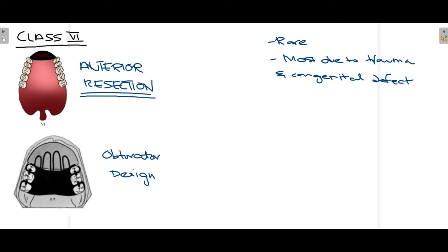In this video, we talked about Aramany's classification of maxillectomy — what maxillectomy is, what an obturator is, the basic objectives of an obturator to keep in mind before designing one, and the importance of planning your obturator before surgery so that the space created by surgery can be optimally closed. We then discussed in detail the different classes — Class 1 through 6 — present in this classification. I hope this video was useful. If you liked it, please like, share, subscribe, and press the bell icon. Thank you for watching. See you next time.